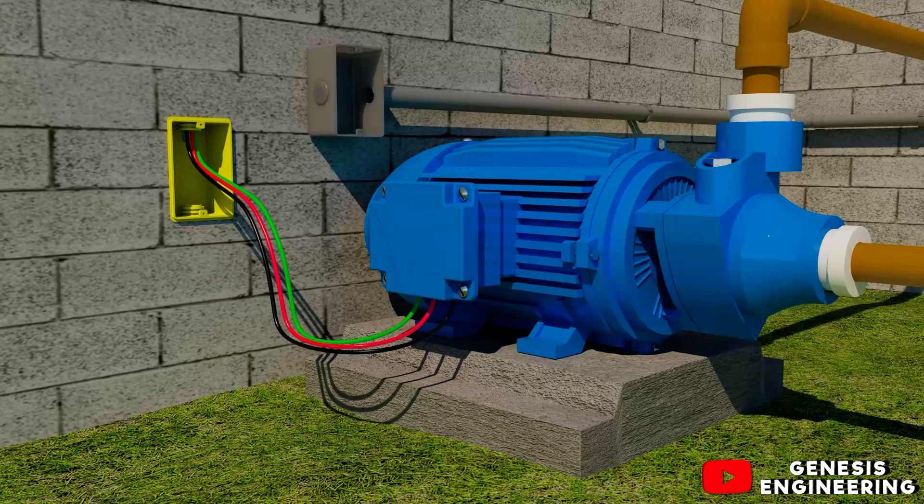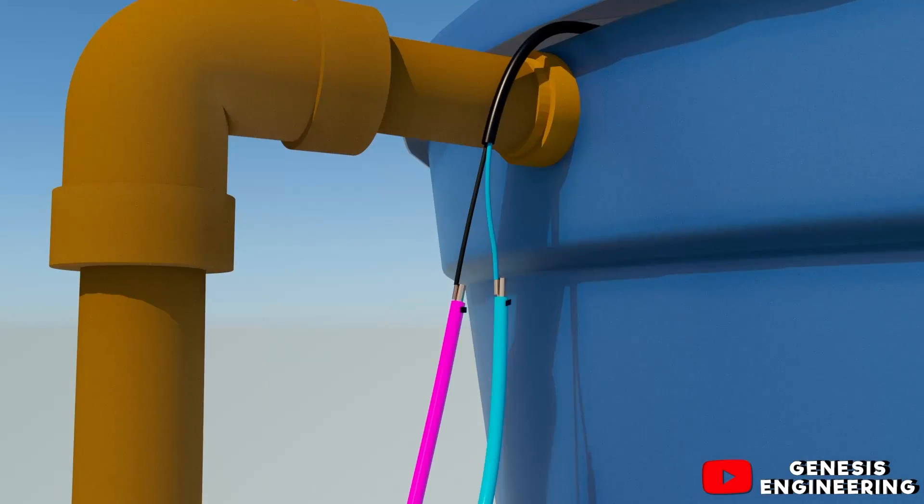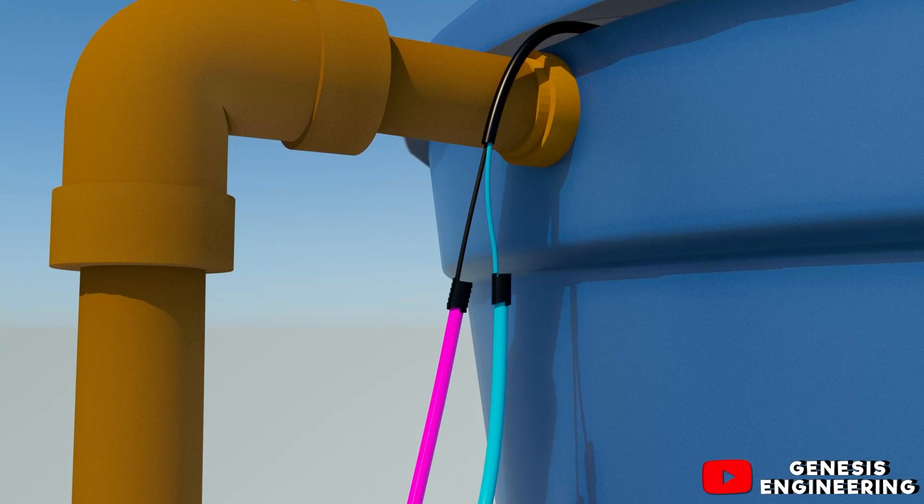The blue and purple conductors are connected to the float switch. Now, in the float switch, we connect the blue lead of A2 of the contactor to the blue lead of the float switch and the purple lead of terminal 3 of the contactor we connect to the black lead of the float switch.